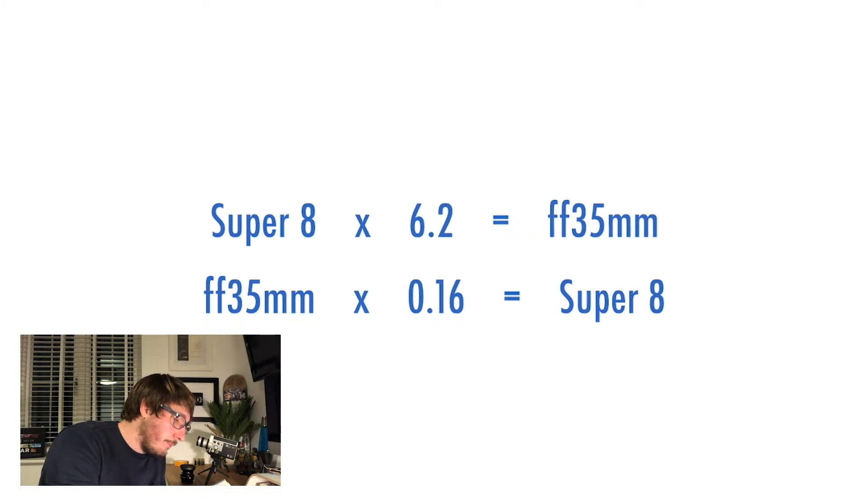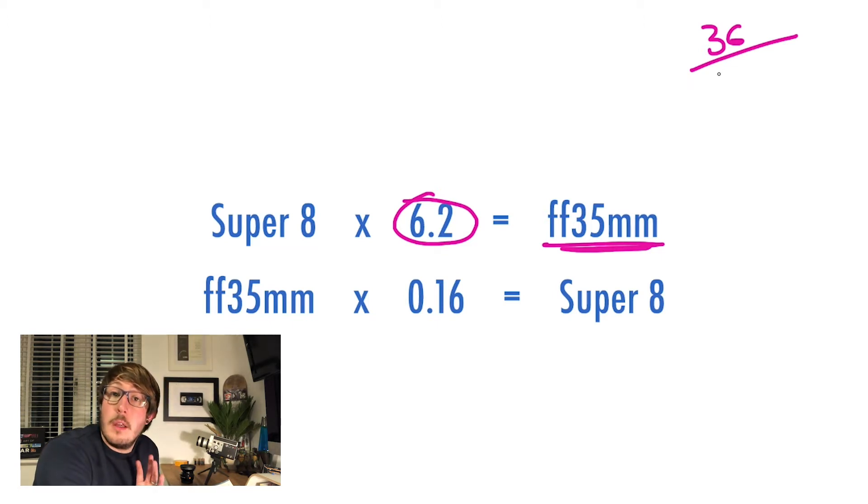I've set myself up in Procreate. Basically, the maths that you're seeing on the screen now is the crop factors to get from Super 8 to full frame 35 and vice versa. The first number I want to talk to you about is this 6.2 here. That is what I'd consider the main crop factor. This number didn't just come out of nowhere. It takes the width of the 35mm film, which is 36mm, and then divides it by the film back of the Super 8, which is 5.7mm, and that gives us a crop factor of 6.2.